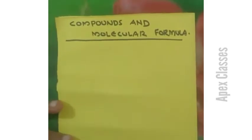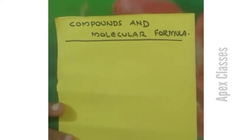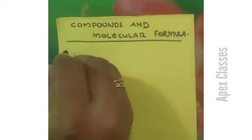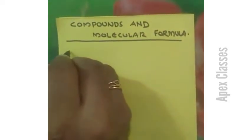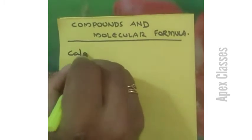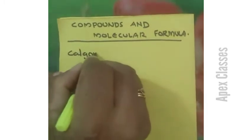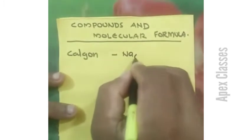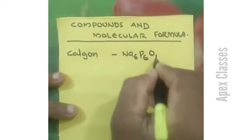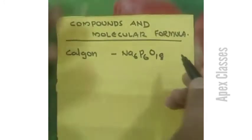Today we are going to discuss some important compounds and their molecular formulas. First one: Calgon. The formula for Calgon is Na6P6O18.